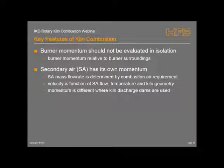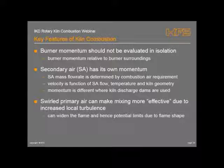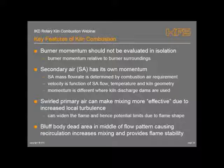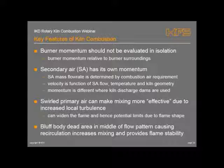If you've got a dam in your kiln, it gets even more complex with secondary aerodynamics. Swirling of the air can improve mixing local to the burner tip and increase local turbulence, but it doesn't necessarily improve the length of the flame or heat transfer within - it's very much burner and burner design dependent. Bluff bodies, used primarily in solid fuel firing, produce a dead area at the tip of the burner which encourages recirculation in the middle flow pattern.